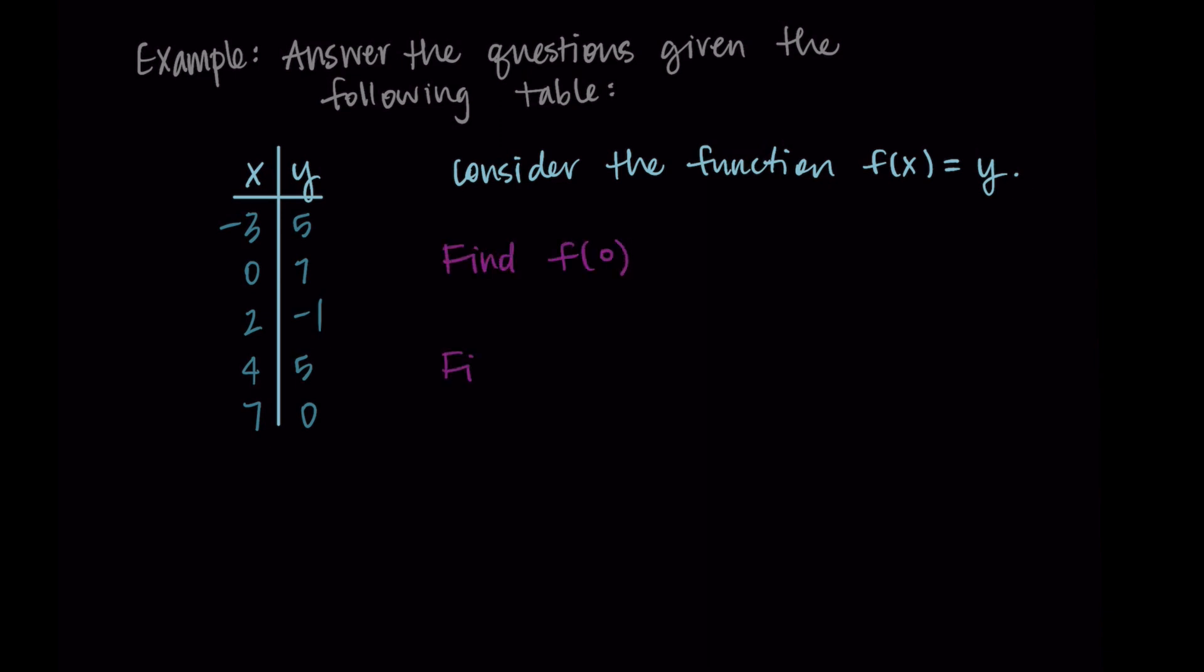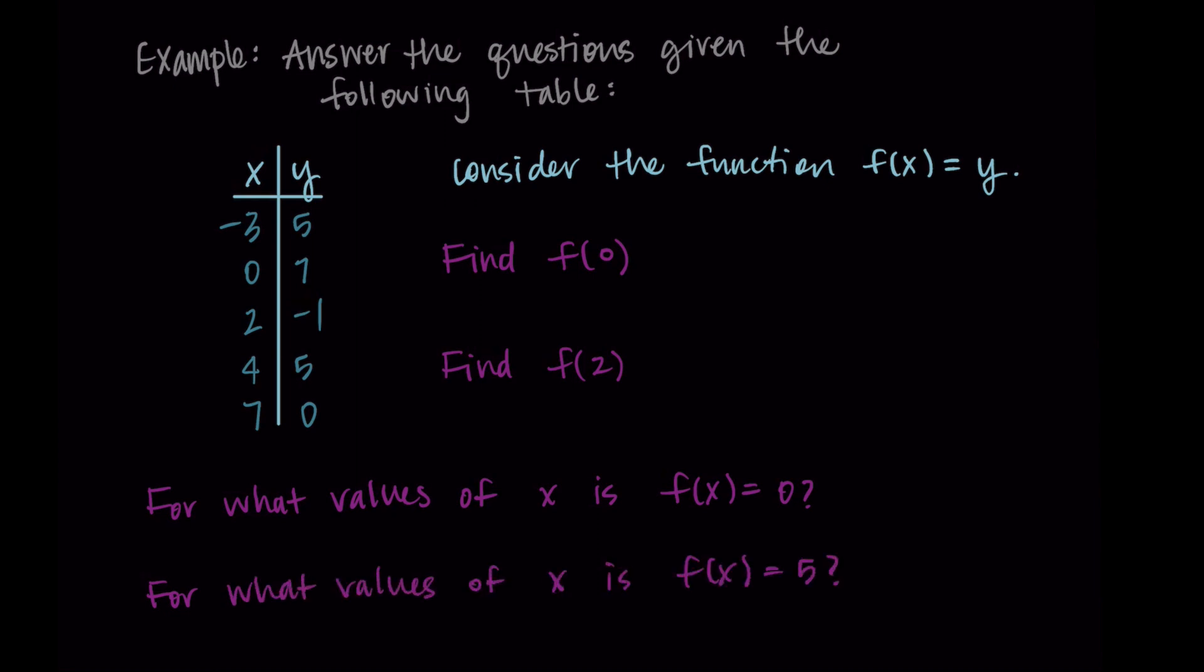Let's find f of zero, let's find f of two, and let's determine for what values of x is f of x equal to zero, and for what values of x is f of x equal to five. So this is our function notation, this f of something, and we're going to use the table to answer all these questions. So since we have f of x equals y, we've determined the function f takes an input x and provides an output y, we can relabel the second column as f of x, since y is equal to f of x. So our columns are really like x and f of x.